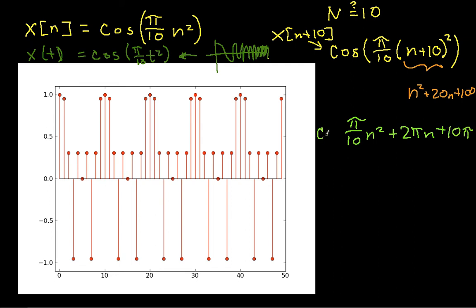And then I'll have π/10 times 20, which is 2π times n, plus π/10 times 100, which is 10π. And I still have the cosine around here. Now the cosine, again, as we've talked about several times already, is periodic with period 2π. So you can see here that I'm adding an integer number of 2π's to my argument here, and I'm adding another five 2π's here. So I'm adding an integer number of 2π's, which means because cosine is periodic with 2π, that this is equal to cos(π/10*n²), which is what we started with. That's what x[n] is.